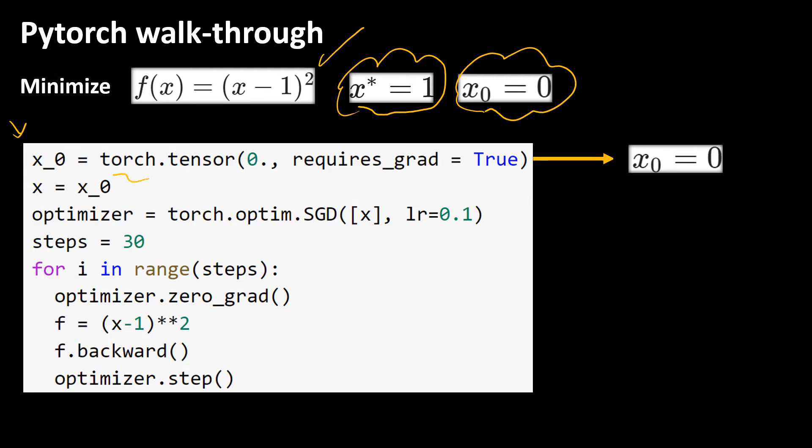torch.tensor is used to define a tensor. Scalars, matrices, and arrays of numbers are all tensors. So we define the initial value as a tensor. There are two things that you should be aware of. First you need this dot right here because this makes our tensor to be a float number.